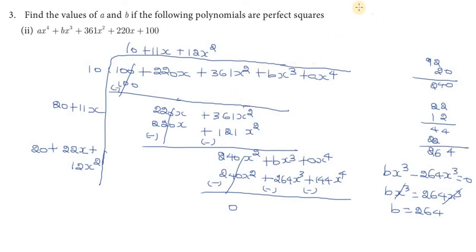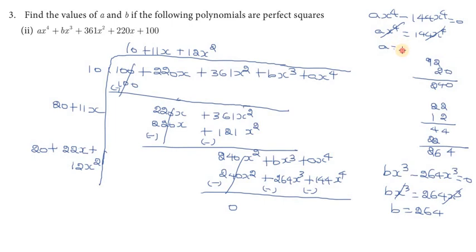So bx cubed equals 264x cubed. x cubed cancels, so B value is 264. Then A: ax to the power 4 minus 144x to the power 4 equals 0, so A equals 144. The final answer is A equals 144 and B equals 264. Note: B value is minus 264 with sign change. Thank you, students.